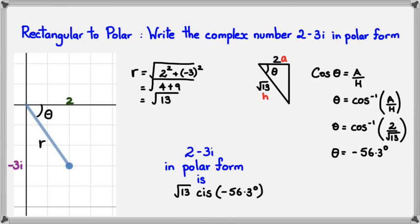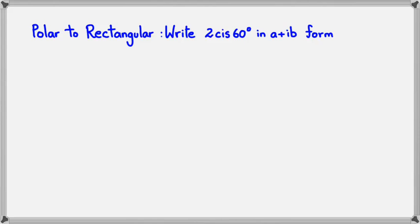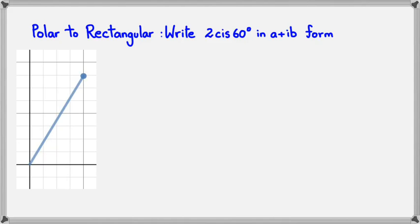The next example is going from polar to rectangular form. Write 2 cis 60 degrees in a plus ib form. Drawing a rough sketch, since 60 degrees is positive, the line rises 60 degrees above the x-axis. The argument is 60 degrees and the modulus is 2.